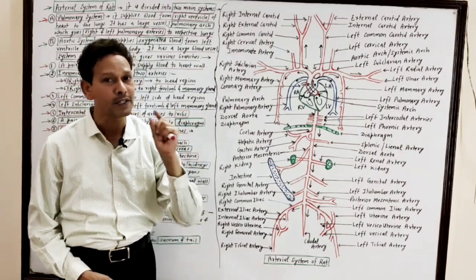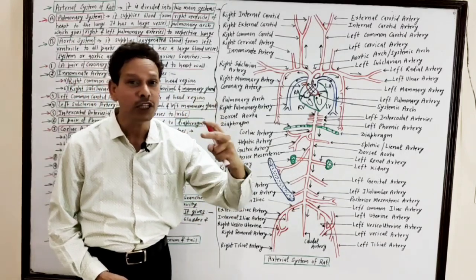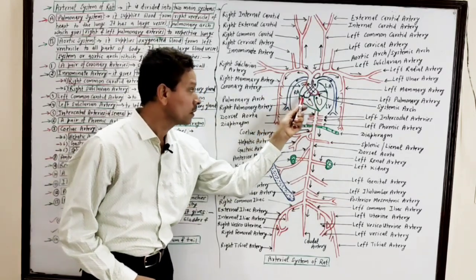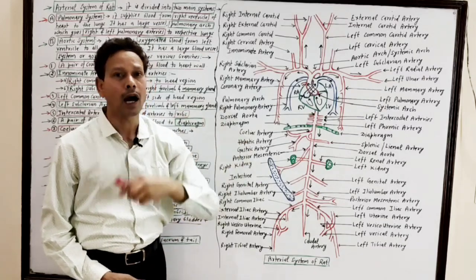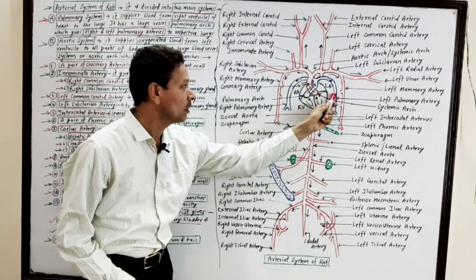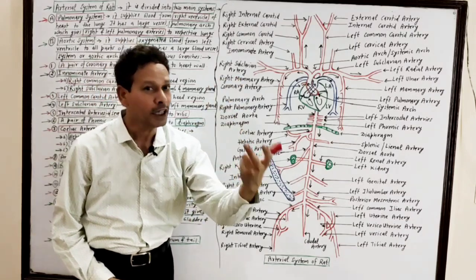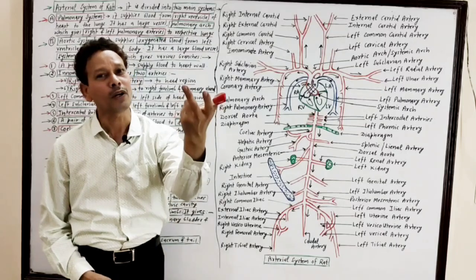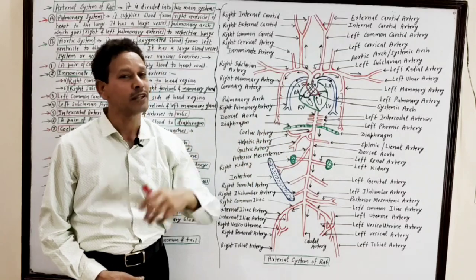The first part of the arterial system is the pulmonary system. In this system, deoxygenated blood from the right ventricle is carried via this large blood vessel — the pulmonary arc — which bifurcates into two branches: right and left pulmonary arteries, to carry the deoxygenated blood from the heart to the lungs for oxygenation.